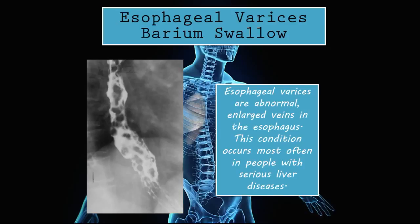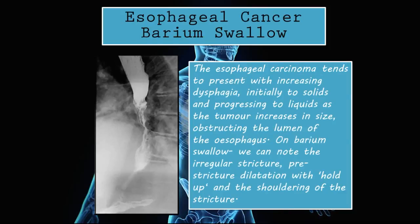Esophageal varices on barium swallow. Esophageal varices are abnormally enlarged veins in the esophagus. This condition occurs most often in people with serious liver disease because of collateral circulation. The veins found in the esophageal wall become enlarged, and on the barium swallow test these little blotches — where the barium doesn't actually stick properly to the wall — are the areas where the enlarged veins are. This is typically what esophageal varices look like on a barium swallow test.